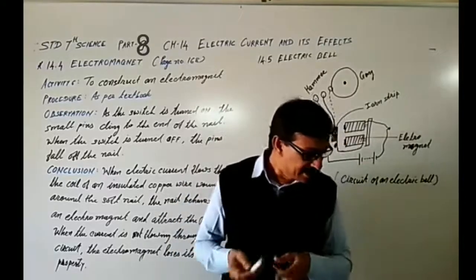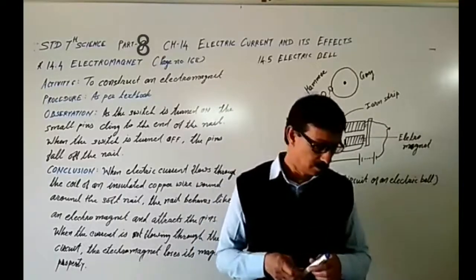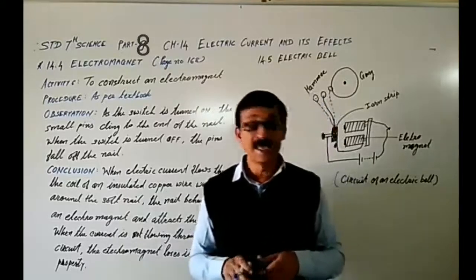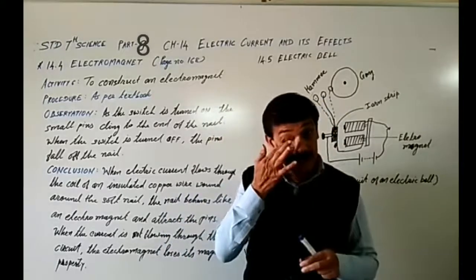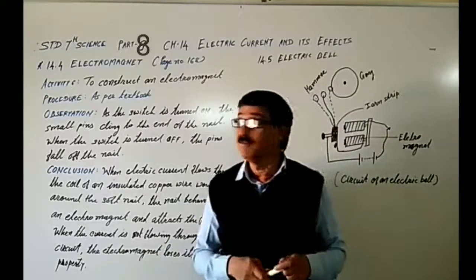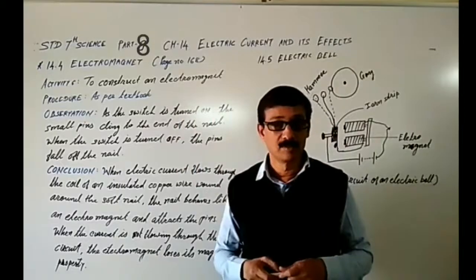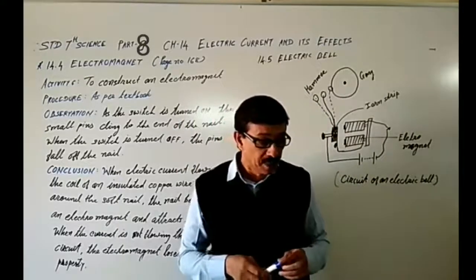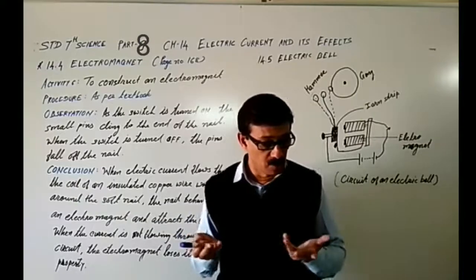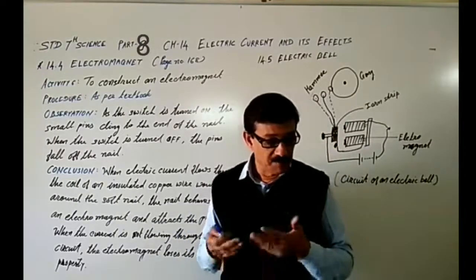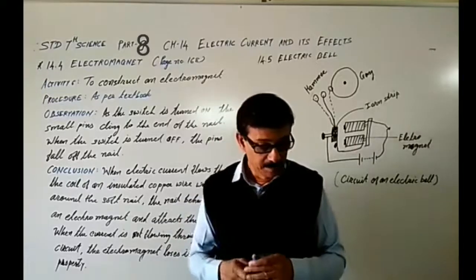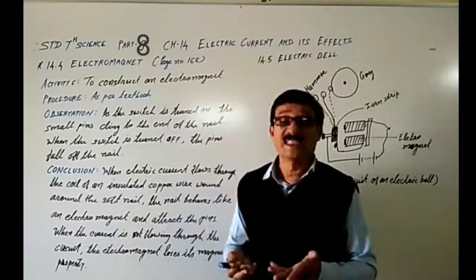An electric current can be used to make magnets — do you find it too surprising? Let us try it out. There is activity 14.6, and the aim of this activity is to construct an electromagnet. Take around 75 centimeter long piece of insulated, plastic or cloth-covered or enamel flexible wire, and an iron nail about 6 to 10 centimeters long.